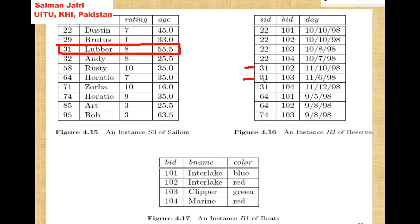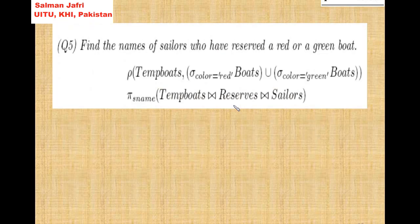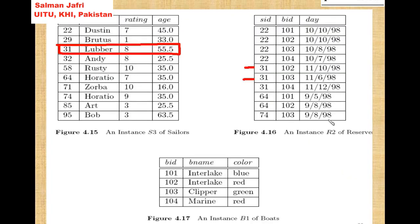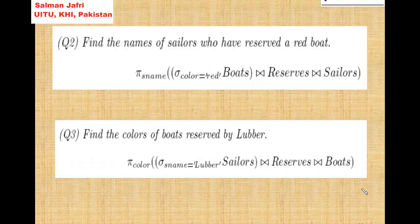So SID 31, 31, 31, and 31 — these are the entries we get from the natural join with reserves. Now we will naturally join that result with boats. We join this with boats and get the matching rows. Then we have to project the color from this result.